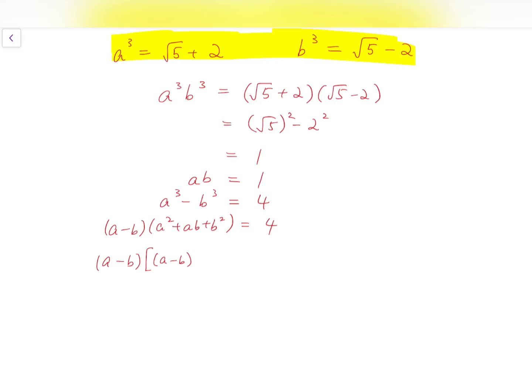It's this expression all squared, and then add by 3ab. And since the product is 1, I can say that a minus b times a minus b all squared plus 3 is equal to 4.